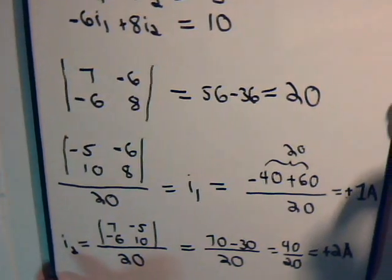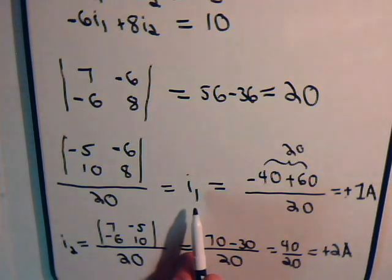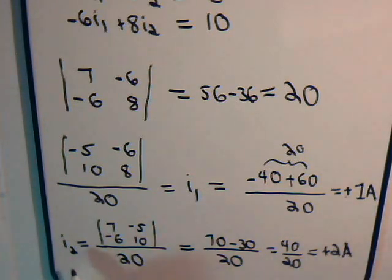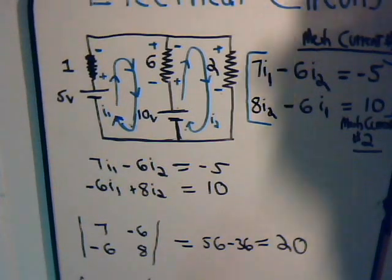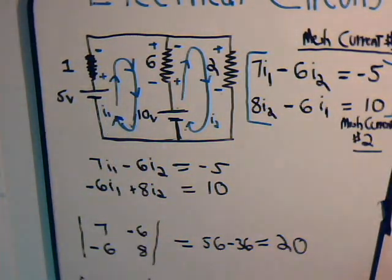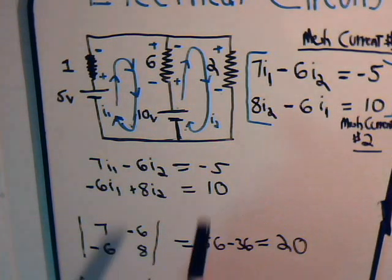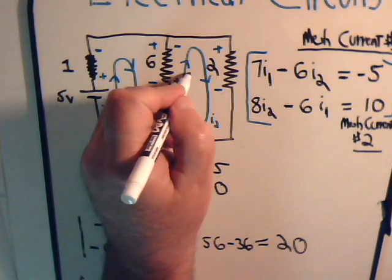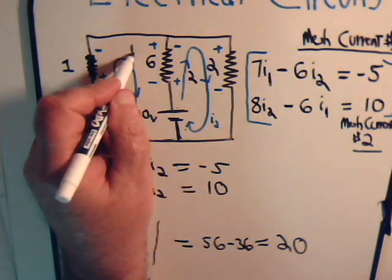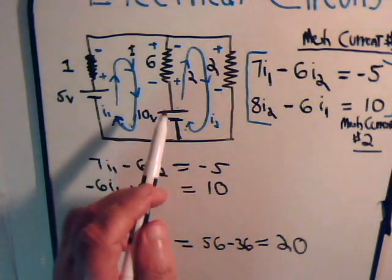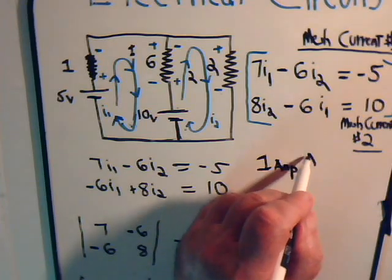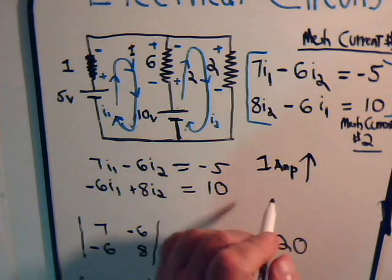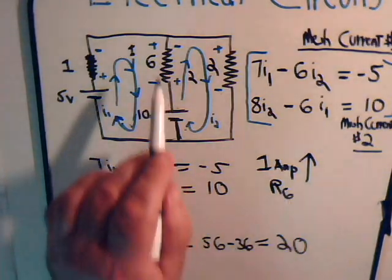So, without much problem at all, we were able to determine current I1 is plus 1 amp, and current I2 is plus 2 amps. So, that means that, in fact, they are going in clockwise directions. Now, for resistor 6, then that's going to be the difference. Here we have, this is 2 amps, and this is 1 amp in this direction. So, the current through resistor 6 will be 1 amp going upward. And that's for a resistor of 6 ohms.